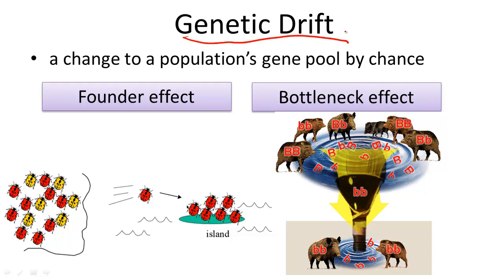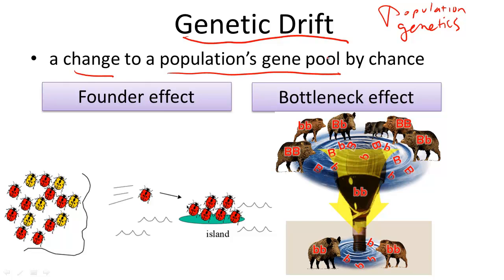To study evolutionary mechanisms, it is important to investigate population genetics. Population genetics is the study of genes within populations. Genetic drift is the random change in frequency of alleles, or a population's gene pool, just by chance.